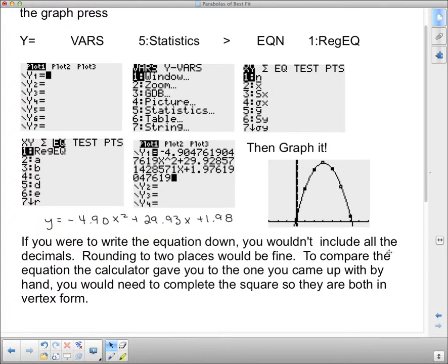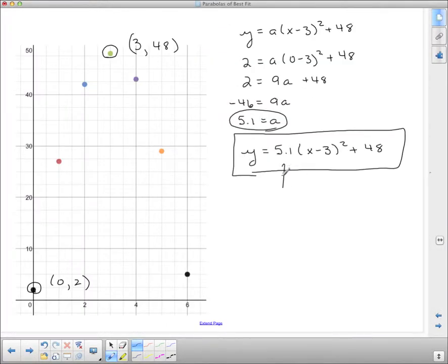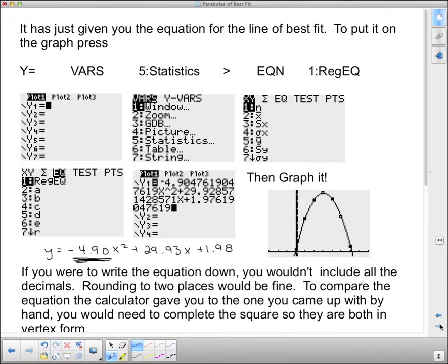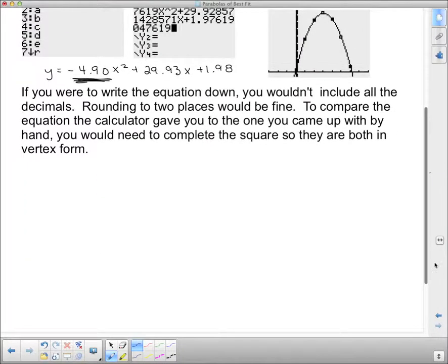If you were to write the equation down, you wouldn't include all the decimals. Rounding to two places would be fine. To compare the equation the calculator gave you with the one you came up with by hand, you would need to complete the square so that they're both in vertex form. But we can make one little comparison here, and that is this a value out front. The a value in standard form will be the same as the a value in completed square form. So we've got negative 4.9 there. And what did we get for our a value when we did it by hand? We got negative 5.1. Negative 4.9 and negative 5.1 are very, very close. So we know our a values are close. And if you completed the square, you would be able to find out what the graphing calculator thought the vertex was. And so that's how you use the graphing calculator to find the equation of the line of best fit.